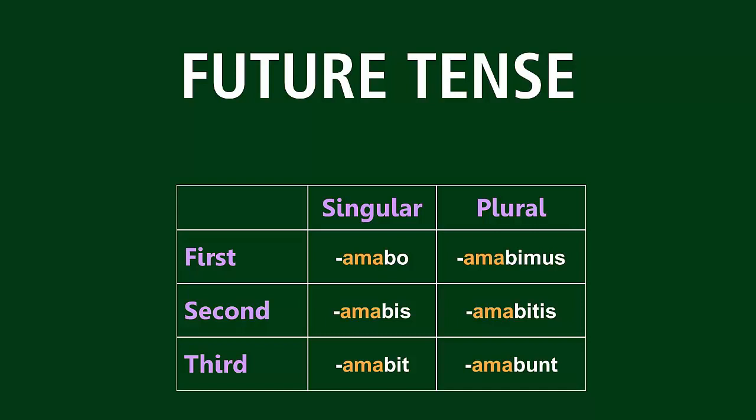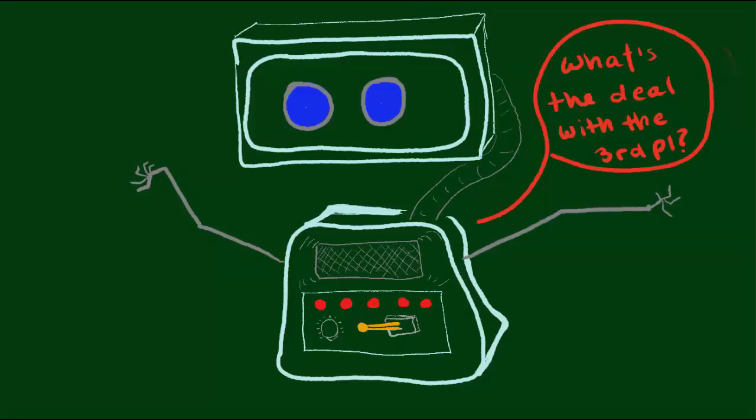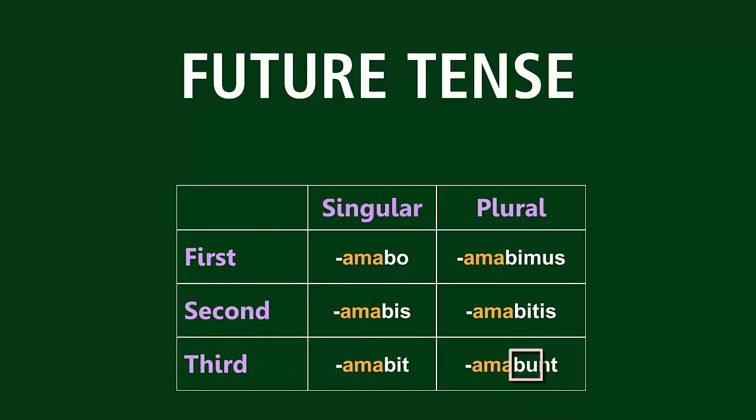One note on the third person plural: you'll notice that except for the first person singular, the future tense is characterized by the B-I letter combination. Except in the third person plural, it becomes B-U. Why? It turns out that Latin simply doesn't like the INT letter combination. So any time it would make logical sense to have an INT ending based on the rules, the I will generally turn into a U. That's a pattern that stays very consistent in Latin. There is one exception which occurs in the future perfect tense, but you don't have to worry about that yet.